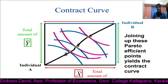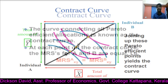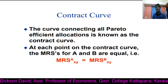These points of intersection are considered as Pareto-efficient points. So, in the diagram, there are three different Pareto-efficient points, namely delta, gamma, and epsilon. And if we join these Pareto-efficient points, that line is known as the contract curve. The contract curve is the curve connecting all Pareto-efficient allocations.